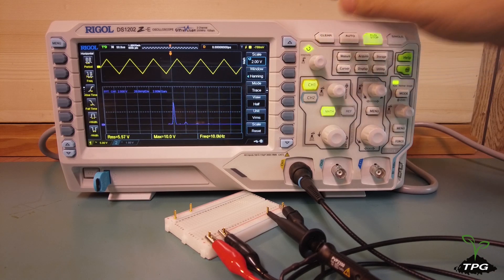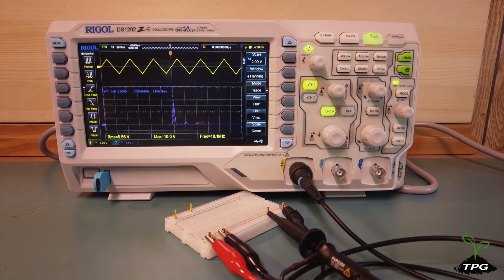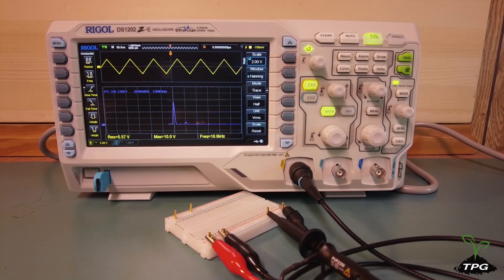Switch the FFT window function from rectangle to Hanning, then recheck the frequency spectrum. The Hanning function provides improved amplitude resolution.